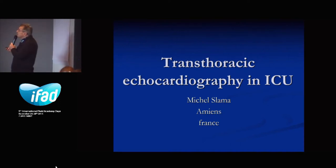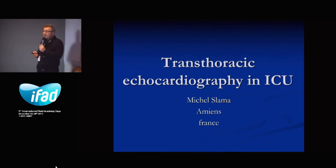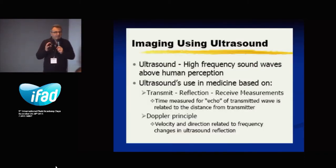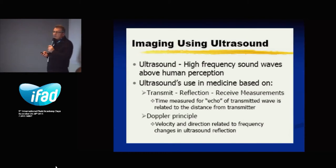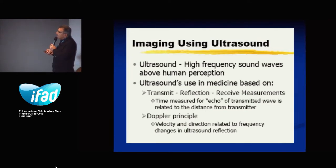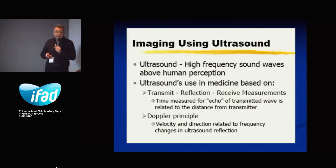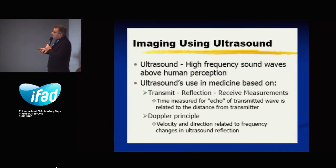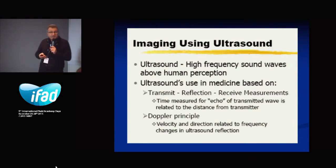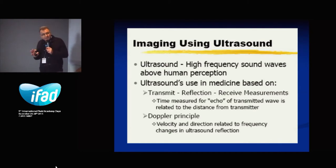Key message concerning transthoracic echocardiography in ICU. Some basic technical principles of ultrasound: the ultrasound we use for echo is based on the transmission, reflection, and receiving of the reflected beam. This is the echo component, and the Doppler is based on the Doppler principle, which allows us to assess the velocity of any flow by measuring the changes in frequency of the ultrasound beam.